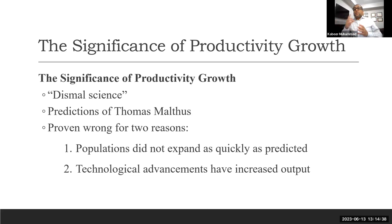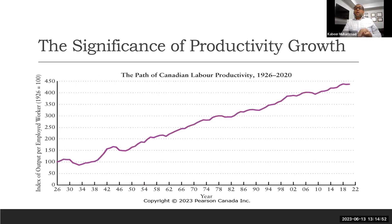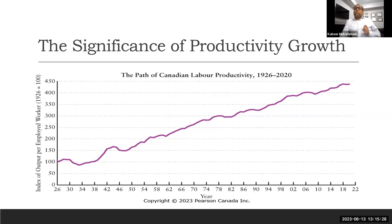Malthus ignored the fact that technological advancement could change the scenario by reducing population growth rates and increasing productivity. This chart reflects Canadian labor productivity over approximately 94 years. Taking 1926 as the base year at an index of 100, productivity reached around 450 — a four to five times increase over almost 100 years. This is all we wanted to share about the perspective of producers in the long run. I hope you liked this, and I'd appreciate if you subscribe and press the like button. Thank you.